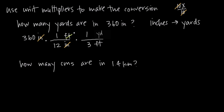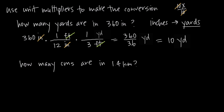Now you can cancel feet in the numerator and feet in the denominator, and you can see that all of our units are canceled except for yards — and that's what we want. So now we just have to multiply across the numerators and multiply across the denominators. 360 times 1 times 1 is 360, and in the denominator 12 times 3 is 36. 360 divided by 36 is equal to 10, so we get 10 yards as our final answer, which means there are 10 yards in 360 inches.